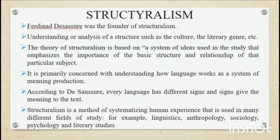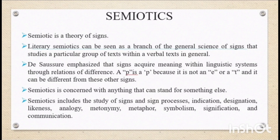Structuralism was given by Ferdinand de Saussure. It involves the understanding or analysis of a structure such as culture, history, genre, etc. The theory is based on a system of ideas that emphasizes the importance of the basic structure and relationships of a particular subject. It is primarily concerned with understanding how language works as a system of meaning production. According to de Saussure, every language has different signs, and signs give us the meaning of the text.